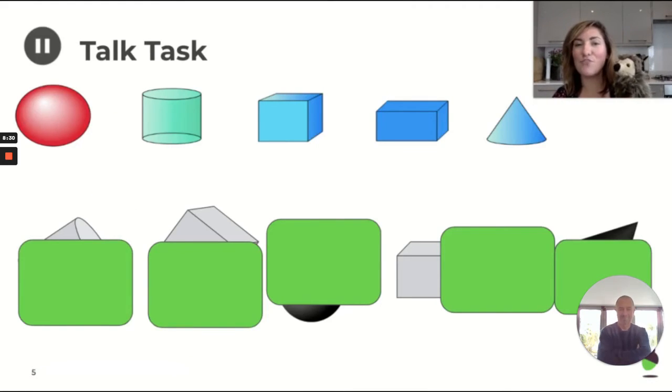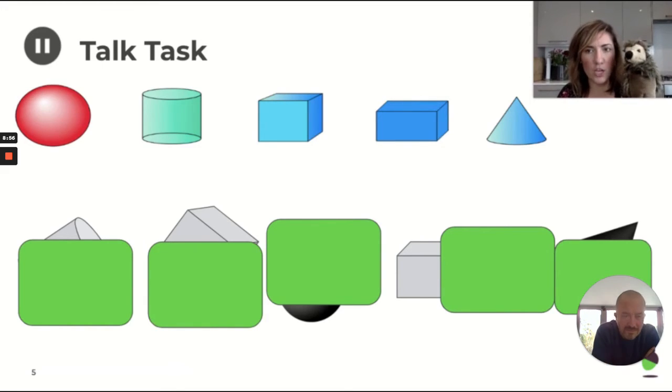Okay, we've got a bit of a challenge for you for your talk task today. Okay. So, we can see all of the shapes up on the top of the screen uncovered. Now, we've got each of those shapes mixed up at the bottom, but we've got some green boxes covering them up.